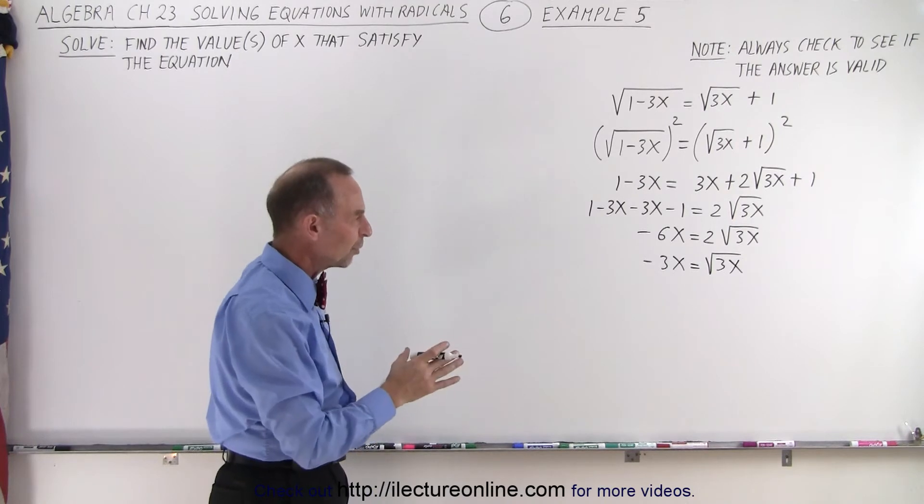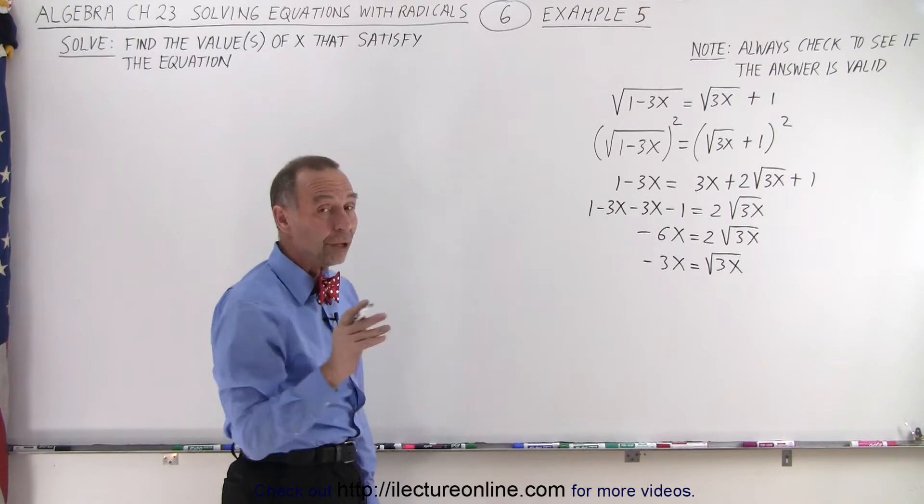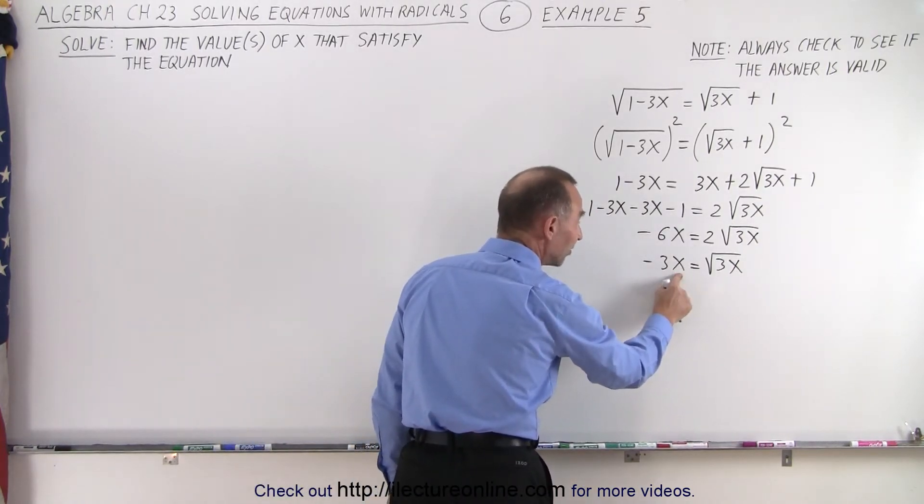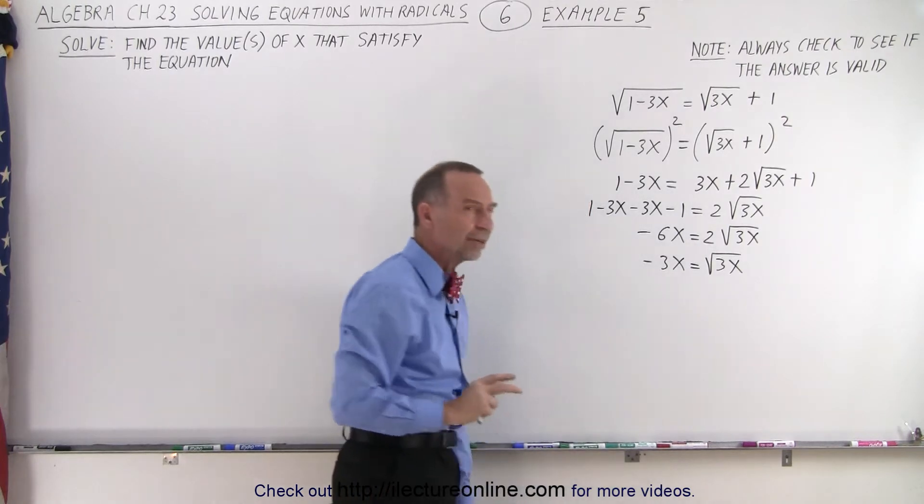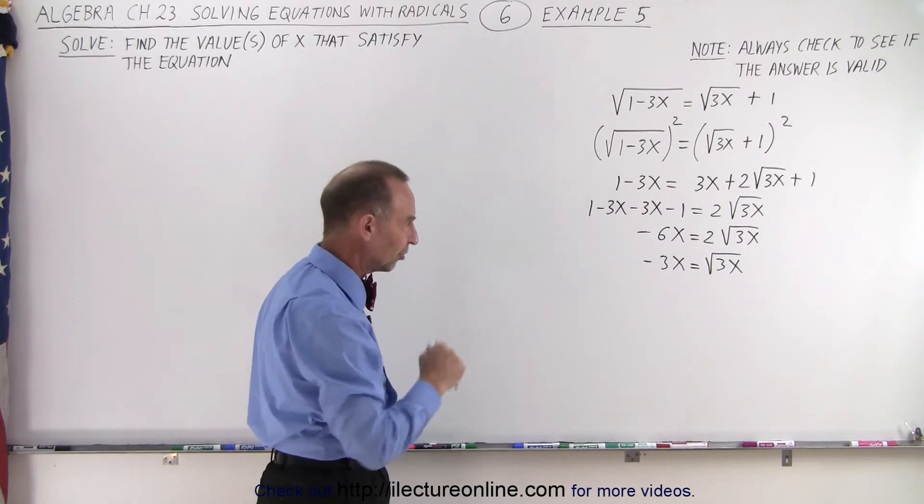Now, we can square both sides. Well, you might say, well, wait a minute, how can the square root of something equal a negative number? But notice, it's minus 3 times x. So when x is negative, the left side is not positive. So there are possibly still solutions to this particular equation.